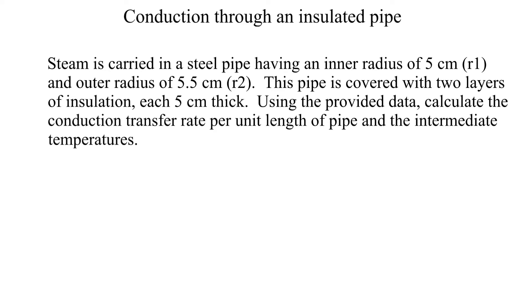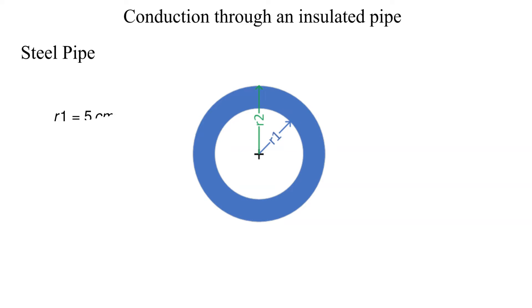Let's review the pipe and insulation data starting with the steel pipe. The inner and outer radii are shown along with the conductivity.